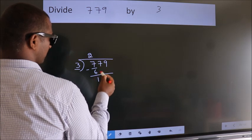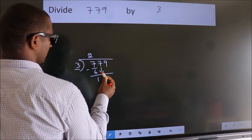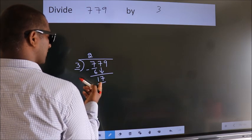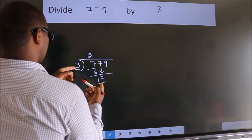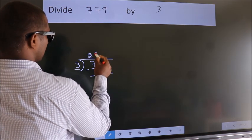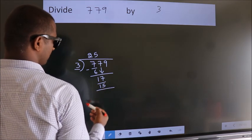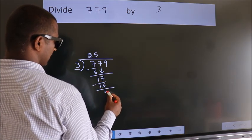After this, bring down the beside number. So 7 down. So 17. A number close to 17 in 3 table is 3 fives 15. Now we subtract. We get 2.